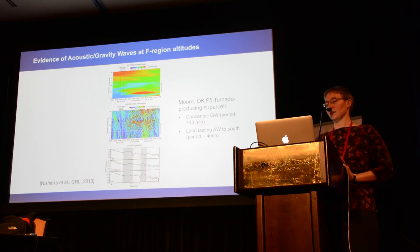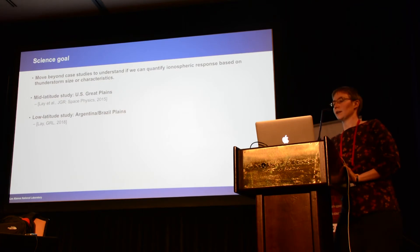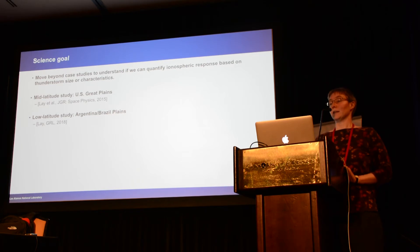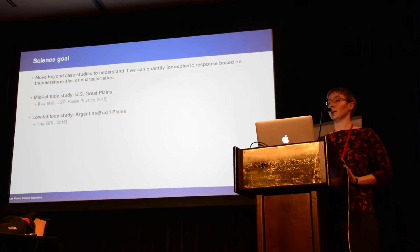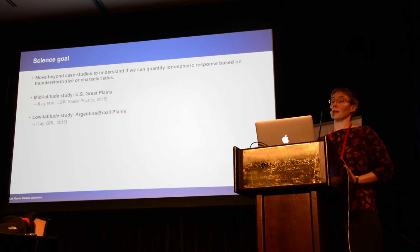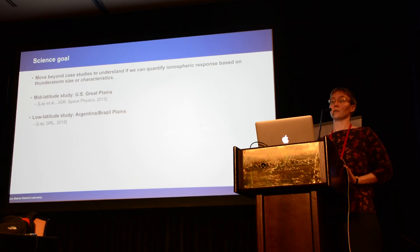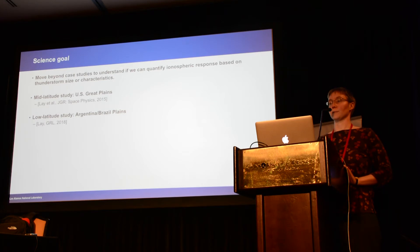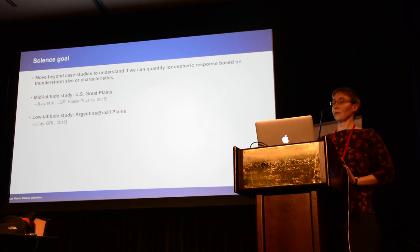Most of this work consists of case studies of particular events. What I've been working on is trying to go beyond case studies to quantify the ionospheric response based on thunderstorm size or characteristics. I looked at statistical studies over long periods of time in two regions: the U.S. Great Plains and the Argentine-Brazilian Plains. These were chosen because both have similar storm types — mesoscale convective systems, the very large storms on the great plains — but they're in different ionospheric regions: mid-latitude and low-latitude, where the ionosphere behaves very differently due to magnetic field orientation.